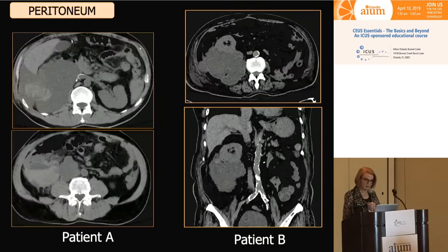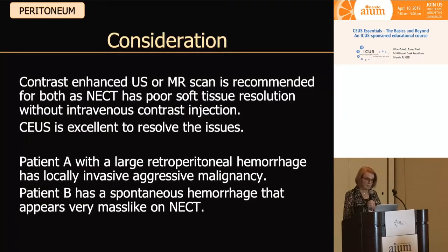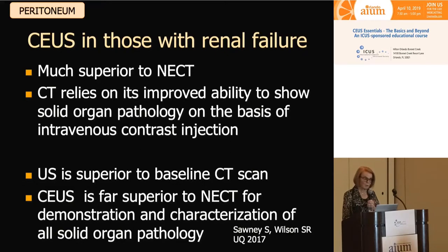An avascular benign lesion — hematoma. Comparing these two patients, both presenting with a retroperitoneal mass: Patient A has hyper-enhancing nodules throughout that mass with infiltrative carcinoma in the peritoneum, while Patient B shows an avascular mass representing a hematoma. Contrast-enhanced ultrasound in those with renal failure is far superior to unenhanced CT scan. CT relies on improved ability to show solid organ pathology based on intravenous contrast. CEUS is far superior to any CT for demonstration and characterization of all solid organ pathology.